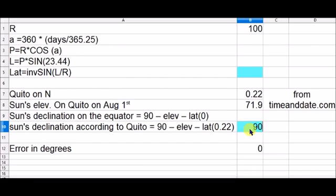So it's 90, I'm sorry, equals 90 minus the elevation angle on that day minus the latitude, 0.22. So the sun declination angle on that day, on August 1st, is 17.88. And this is the error between what timeanddate says and what our calculations are going to say.